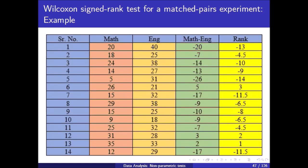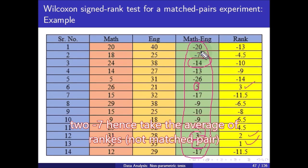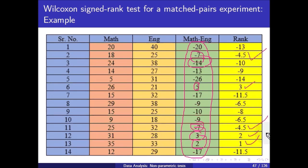We rank the differences irrespective of sign. The minimum absolute value is 2, so it gets rank 1; the next value is 3, rank 2; next is 5, rank 3. There are two values of 7, so they are tied and each receives rank 4.5.